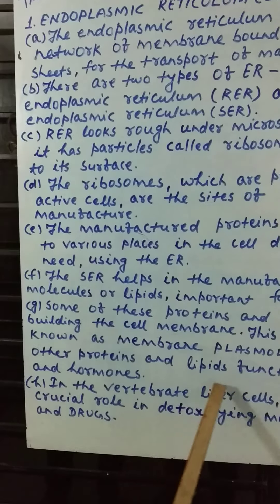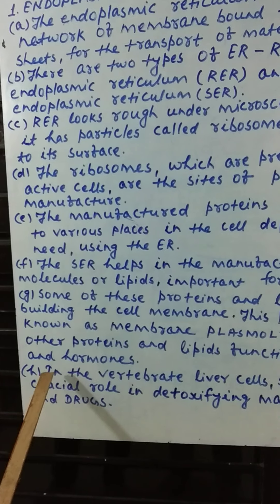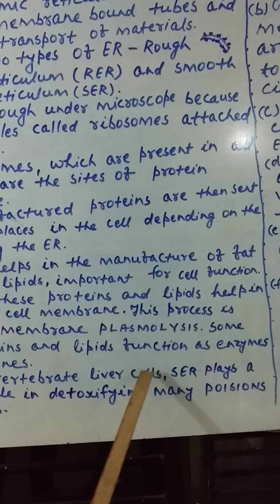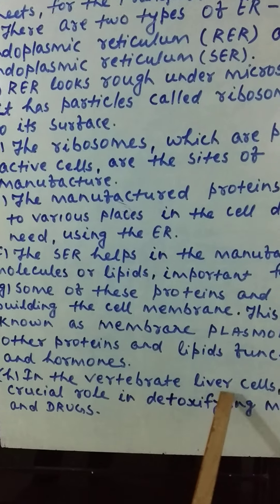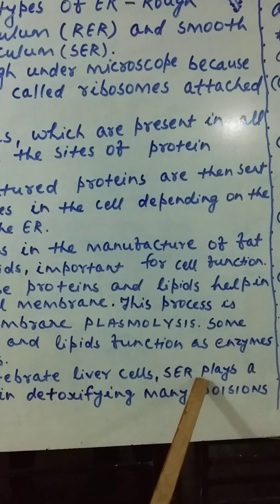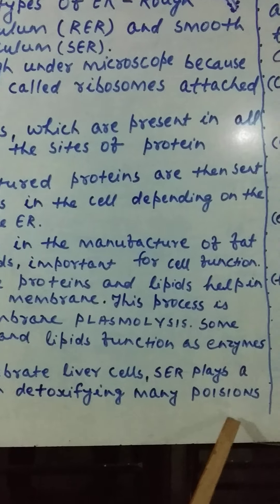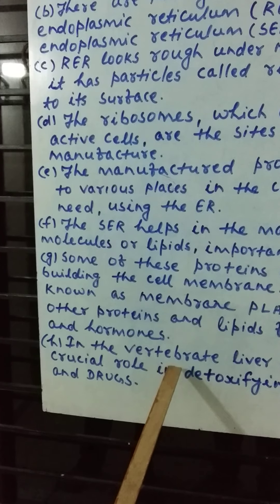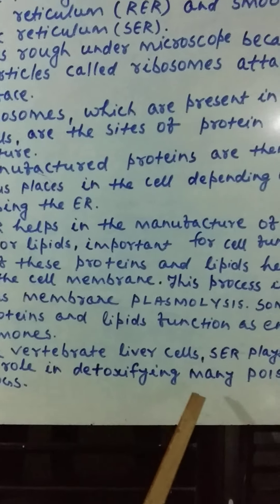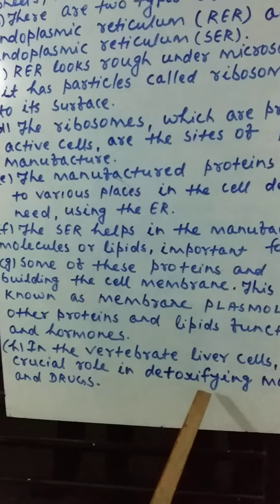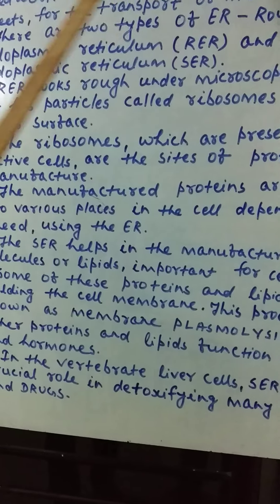Some other proteins and lipids function as enzymes and hormones. In vertebrate liver cells — vertebrate meaning organisms having a vertebral column — the smooth endoplasmic reticulum plays a crucial role in detoxifying many poisons and drugs. This is a special feature of the liver cells of vertebrates. If poison or any drugs enter our body, it tries to detoxify them.